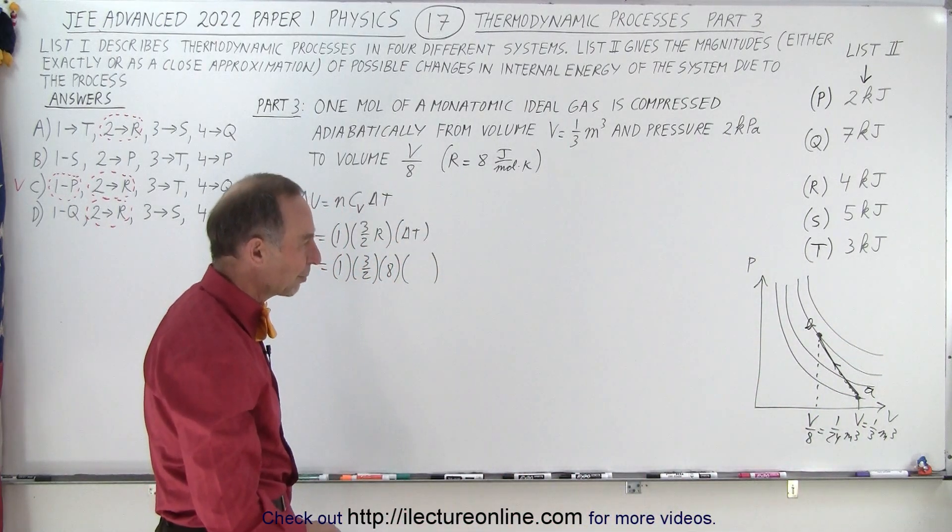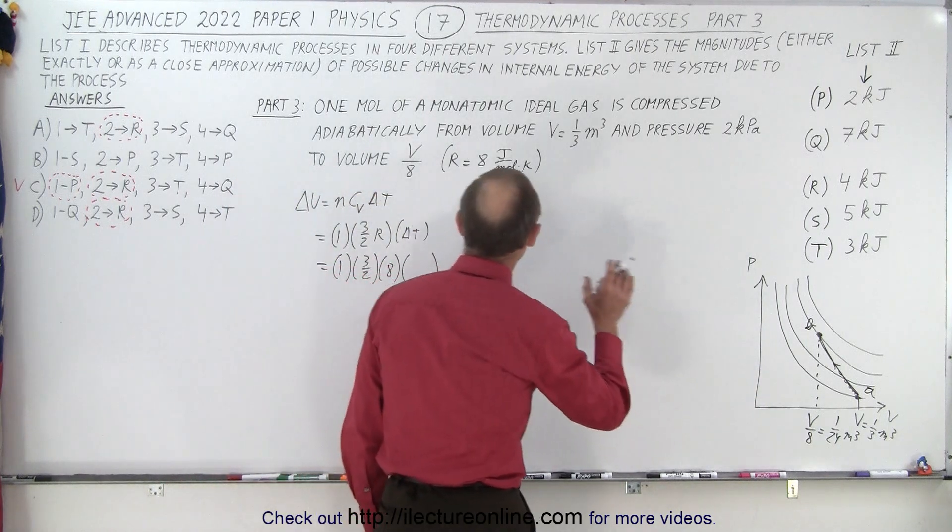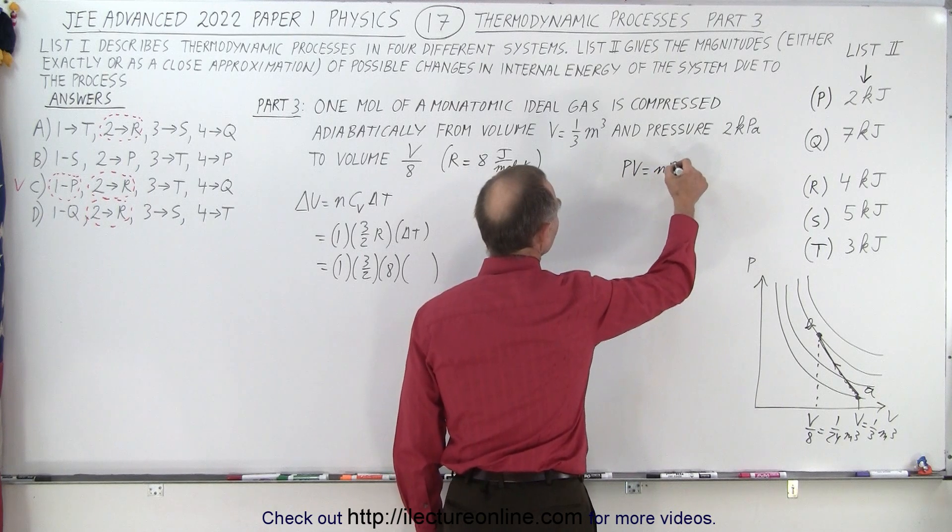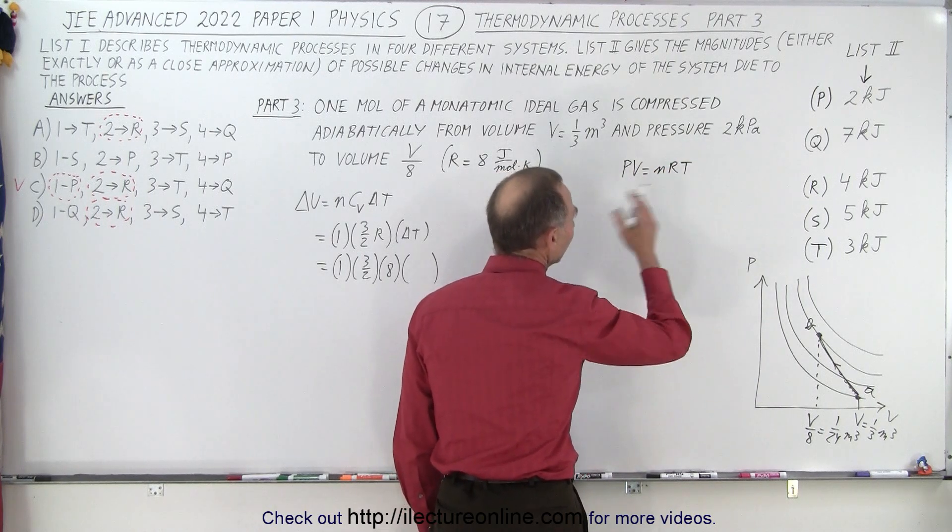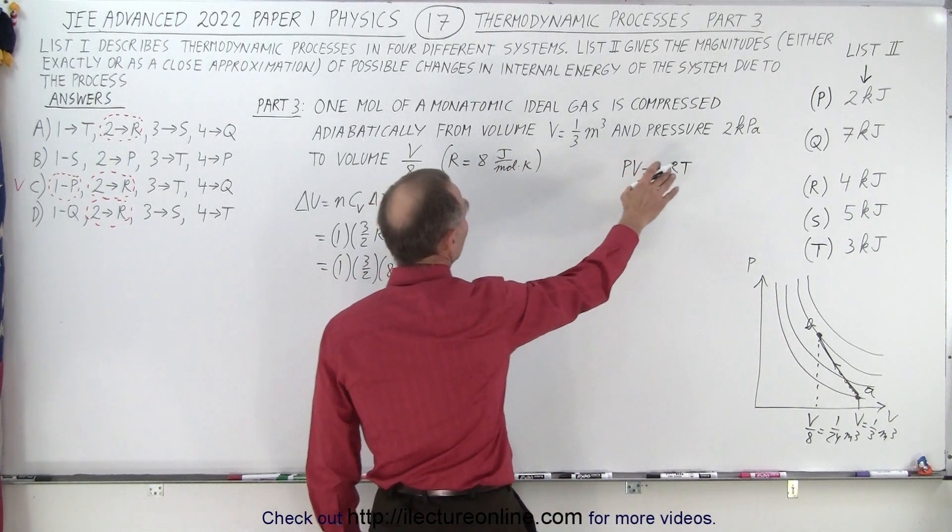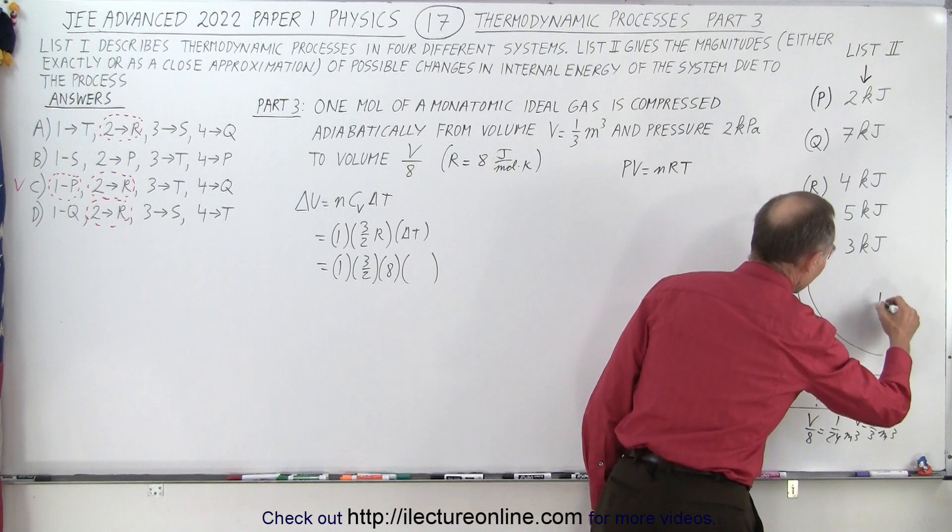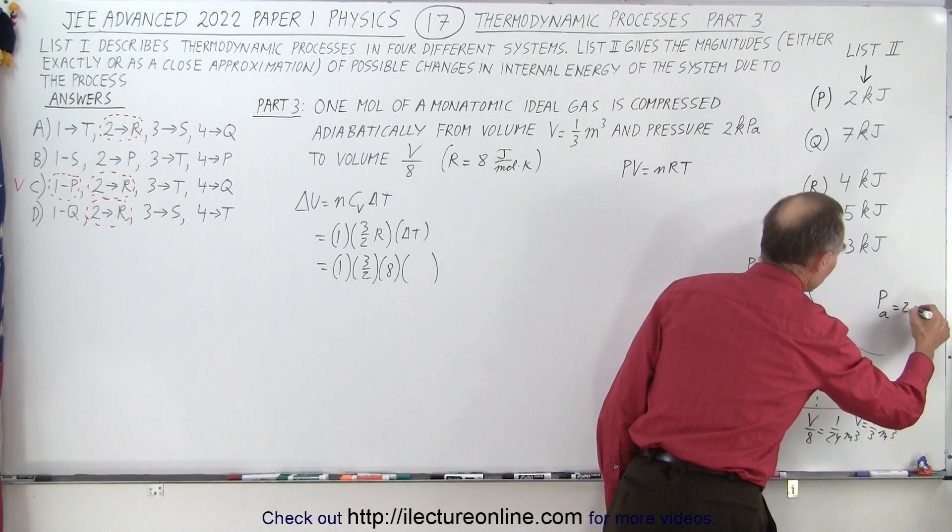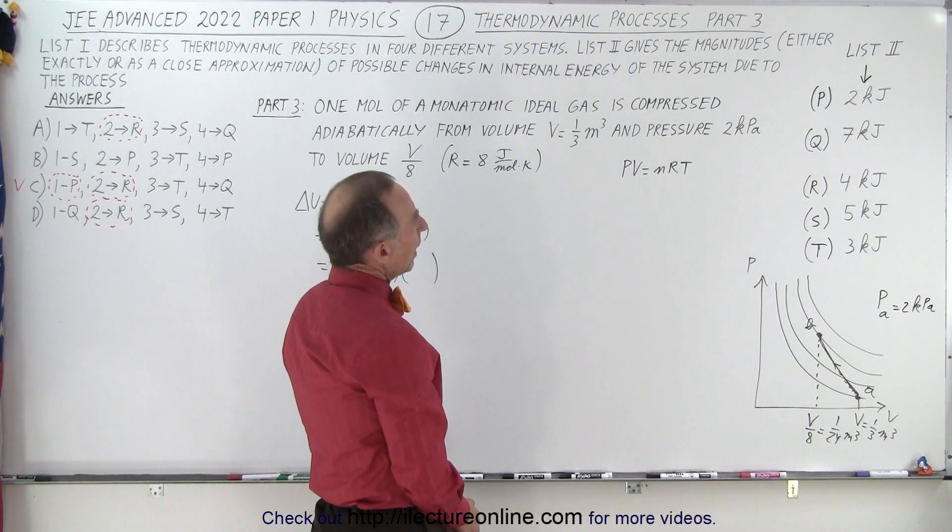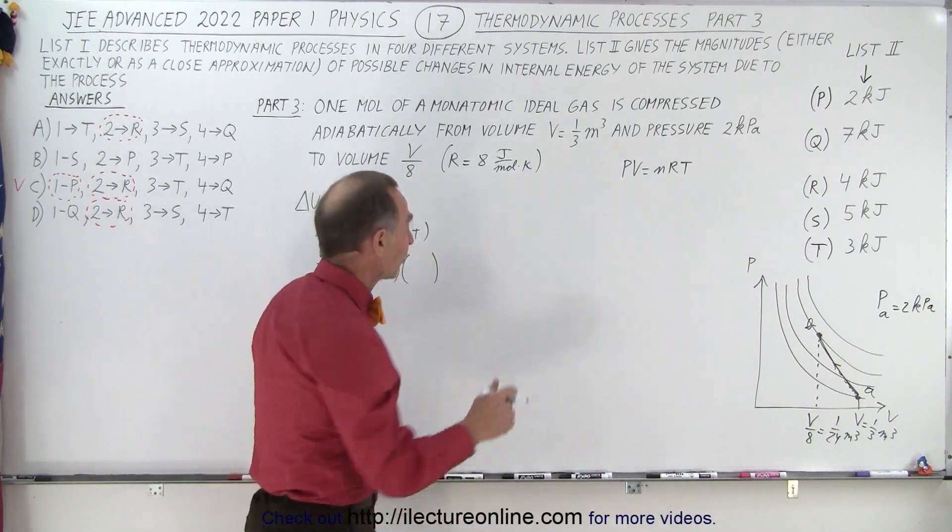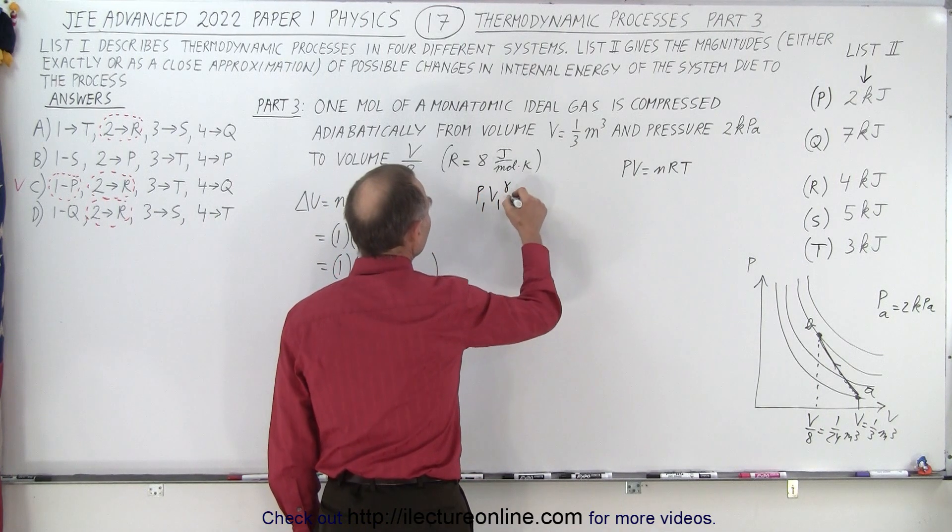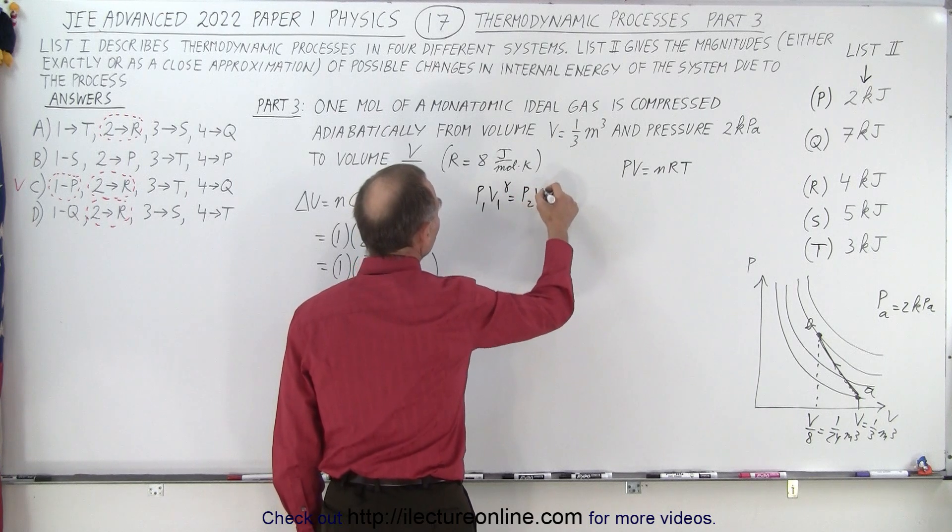How do we find the change in the temperature during that process? We need to use two equations. We need PV equals NRT. That means we need to find a relationship between the pressure and the volume. They tell us that we start out with a pressure of two kilopascals, that's 2,000 pascals. With an adiabatic process, we also need this equation where...